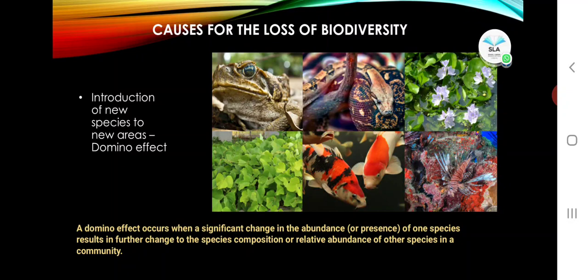A domino effect occurs when a significant change in the abundance or presence of one species results in further changes to species composition or relative abundance of other species in a community. The extinction of the dodo bird — Raphus cucullatus — and the dodo tree in Mauritius Island has been cited as an example of the domino effect.